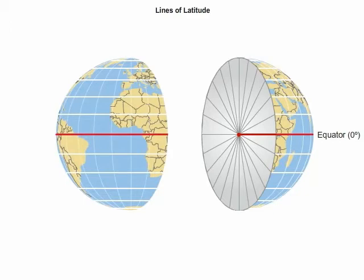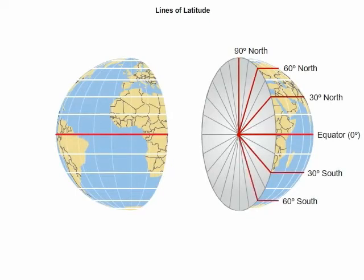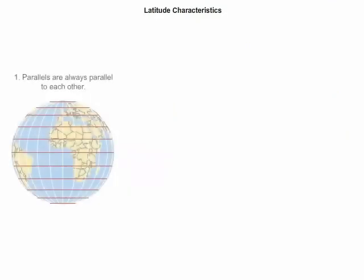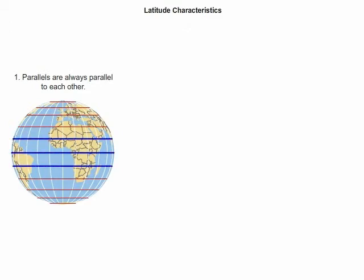Latitude increases starting from zero degrees at the equator to 90 degrees north at the North Pole and 90 degrees south at the South Pole. The visual characteristics of parallels include parallels are always parallel to each other.